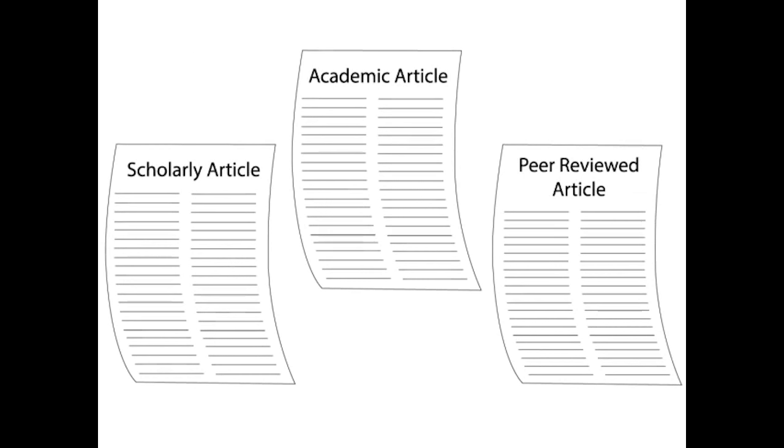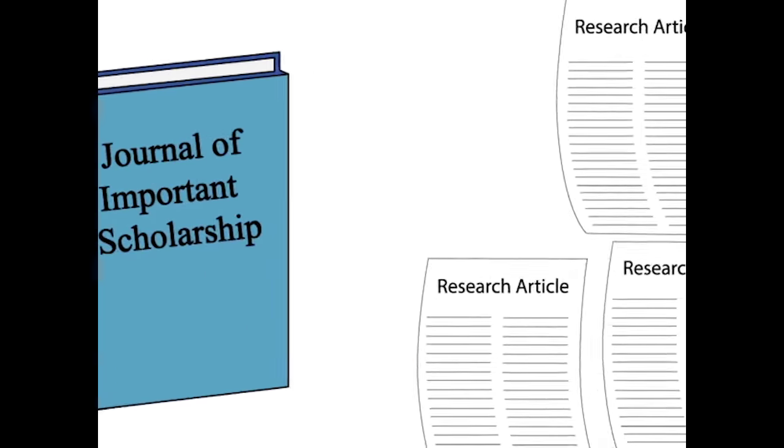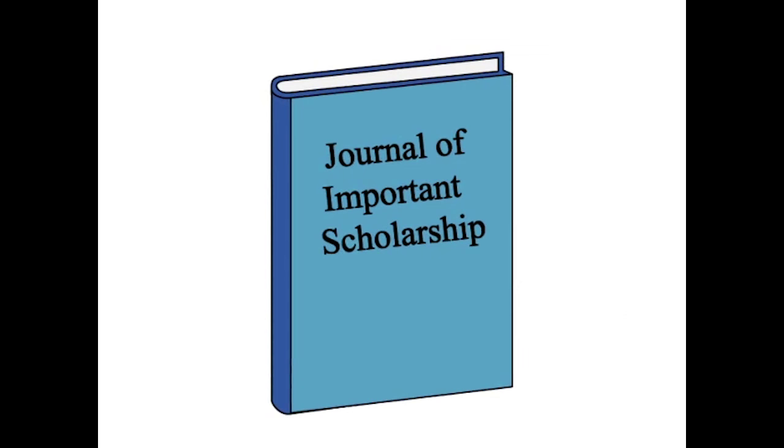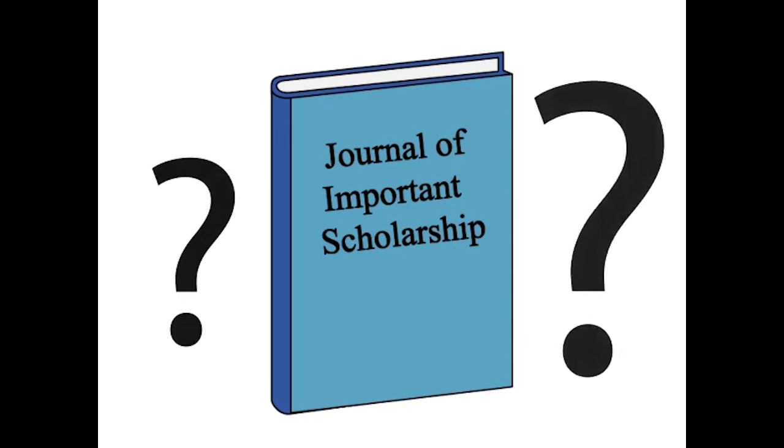Essentially, these are all different ways of describing the same thing: research articles that have been published in scholarly journals. But what is a research article, and how does it get published in a scholarly journal?